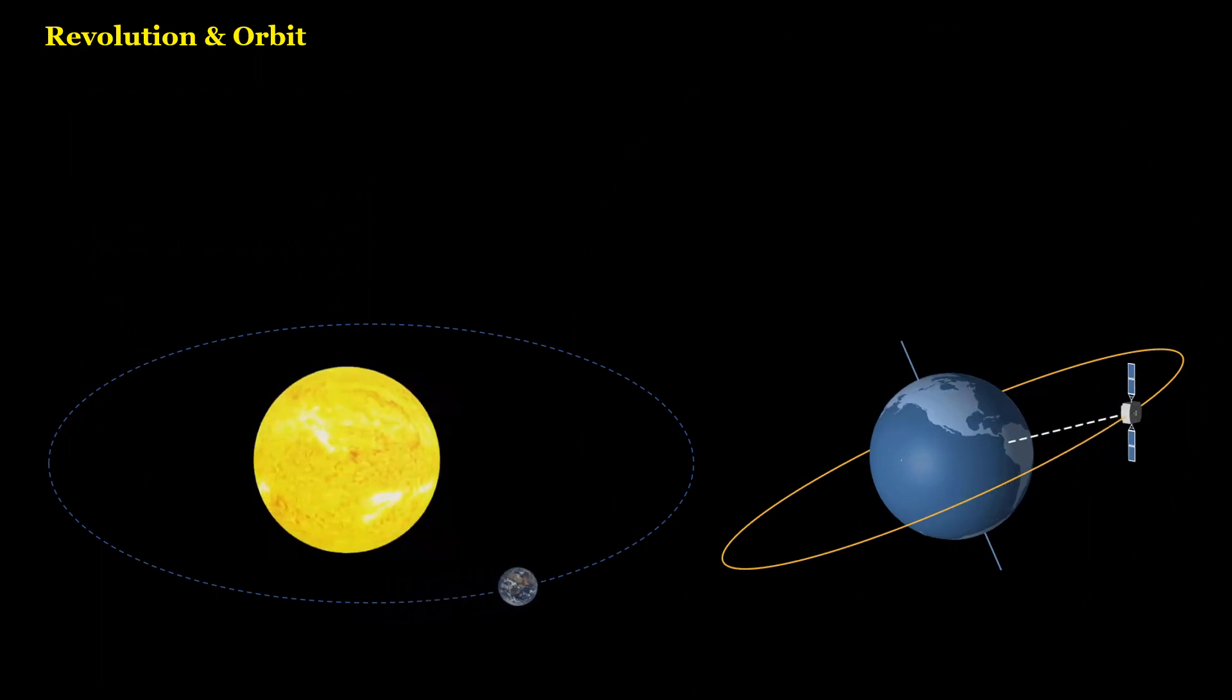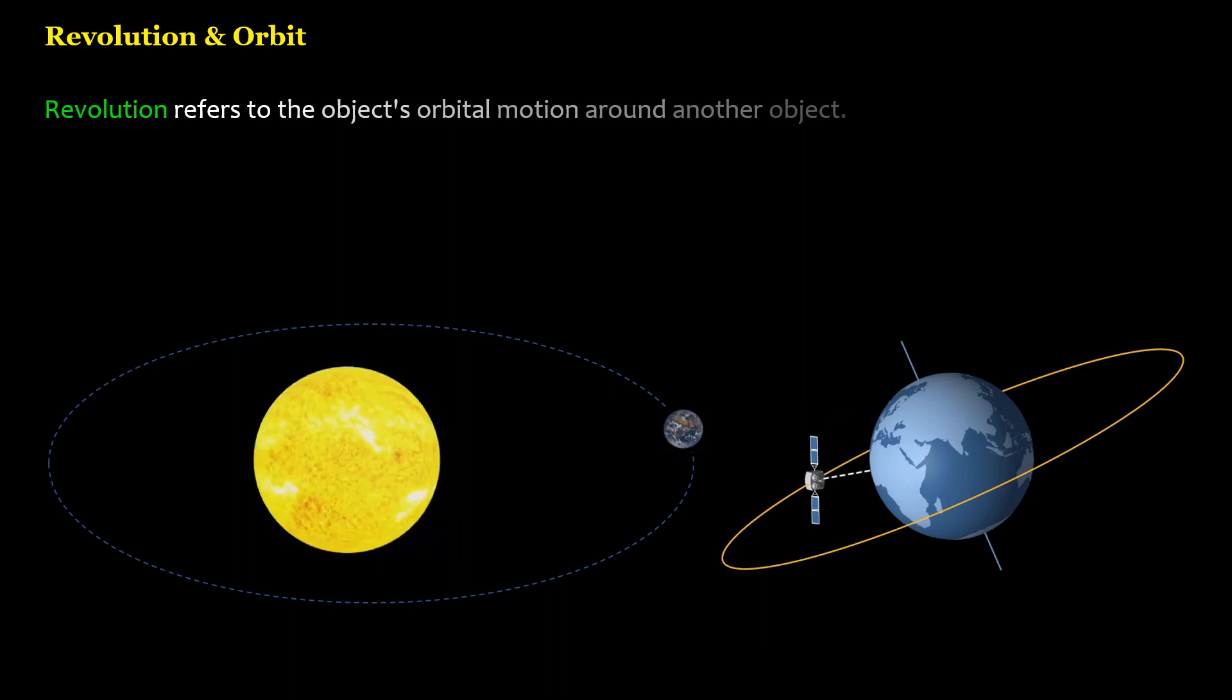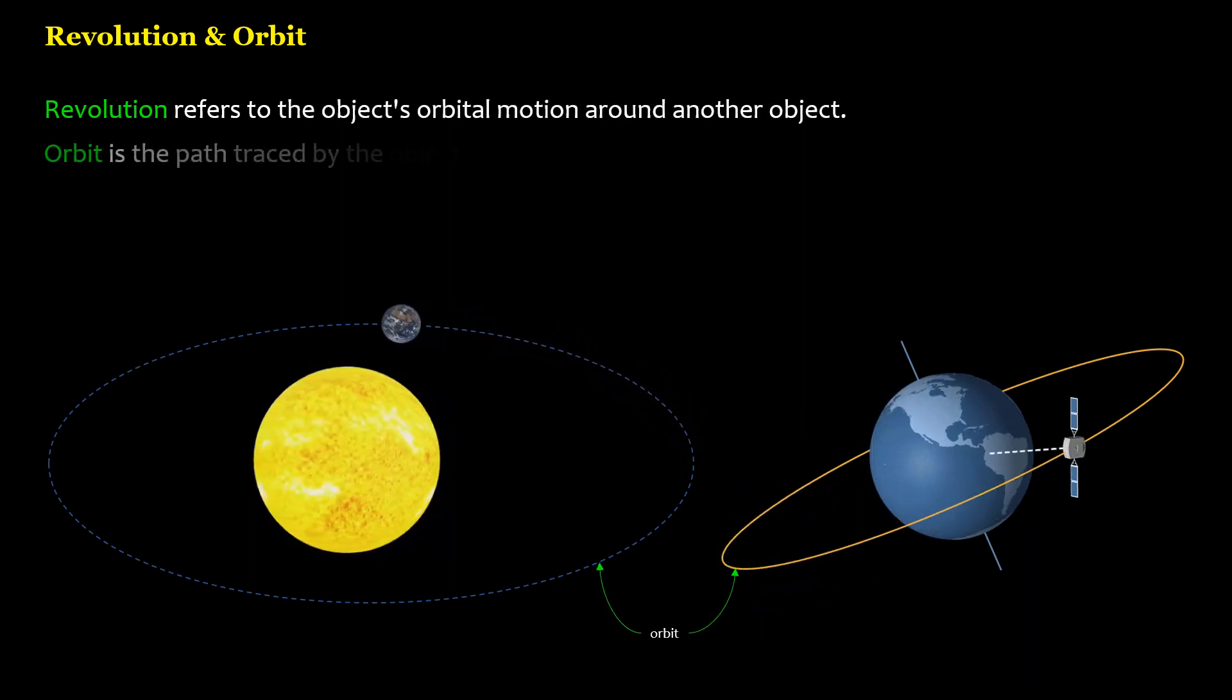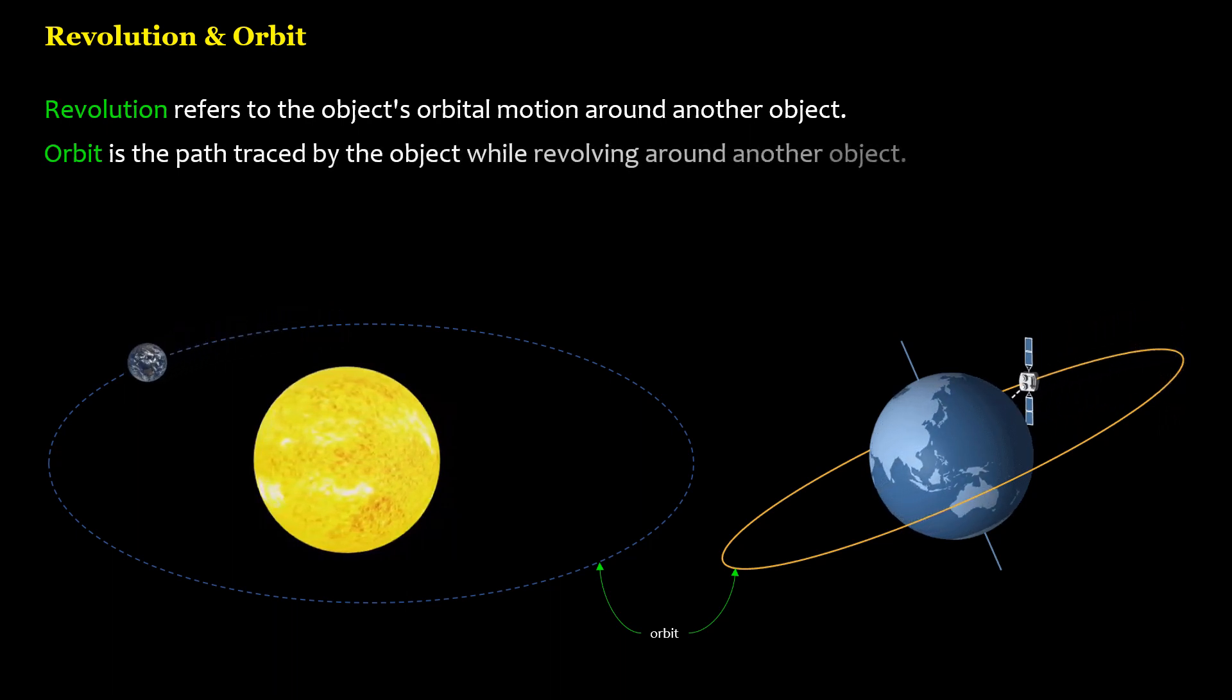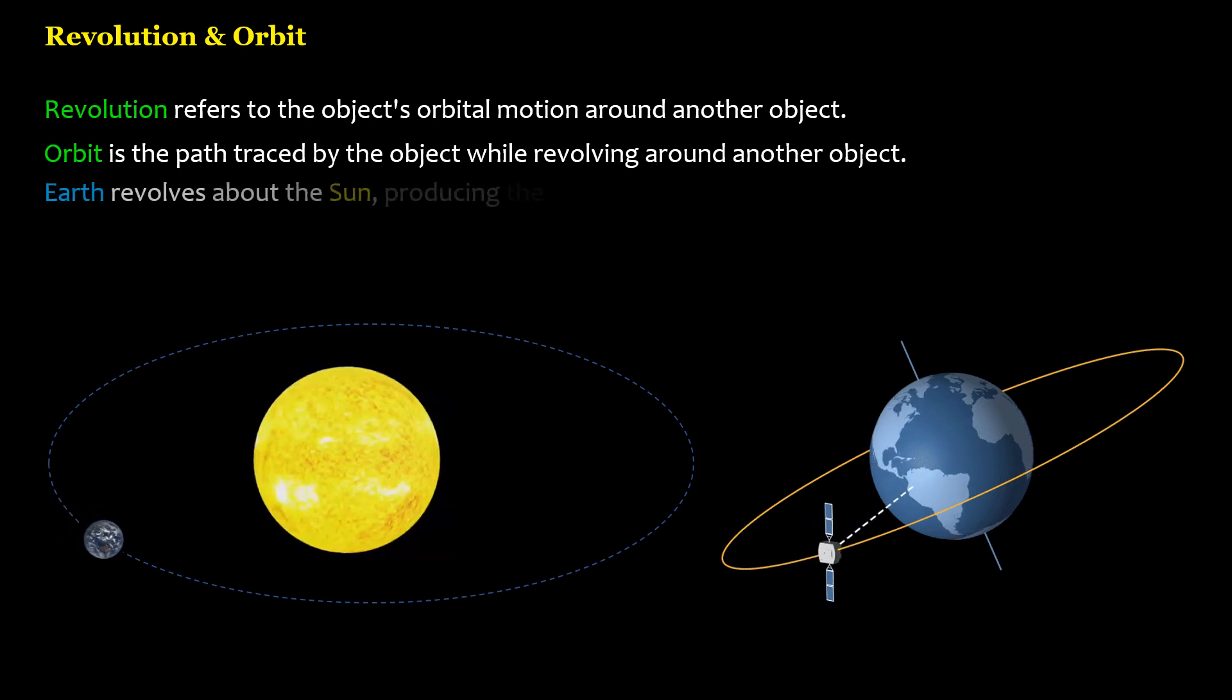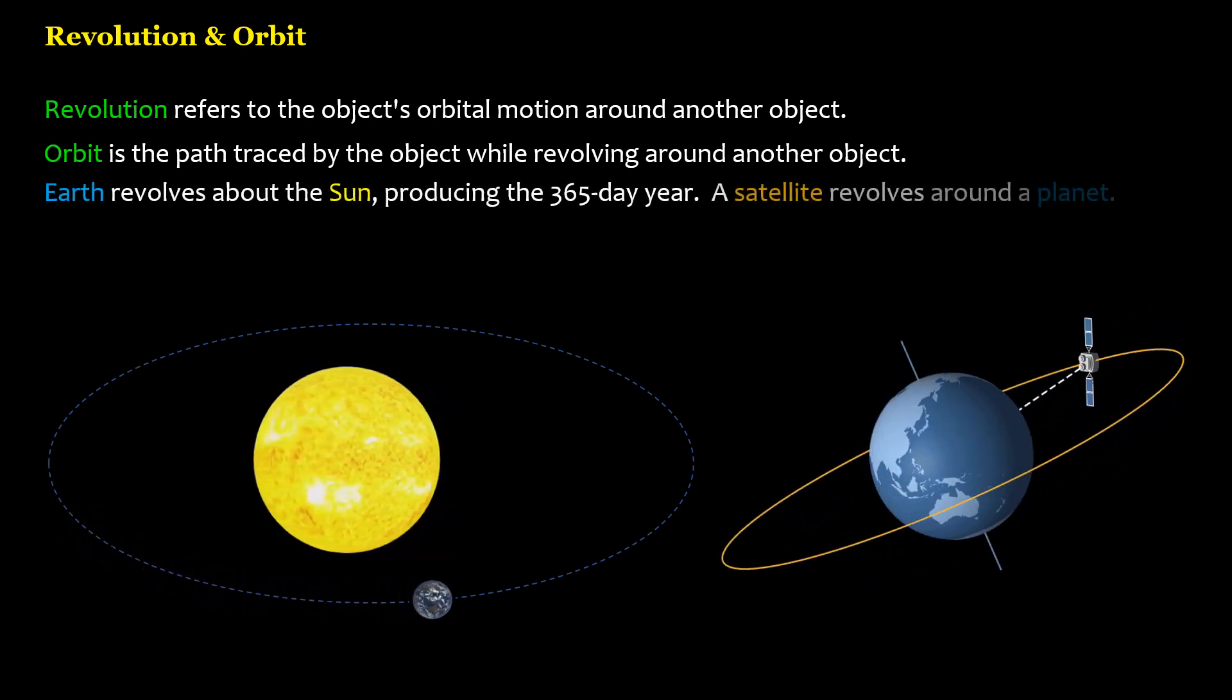Revolution and Orbit. Revolution refers to the object's orbital motion around another object. Orbit is the path traced by the object while revolving around another object. Earth revolves about the sun, producing the 365-day year. A satellite revolves around a planet.